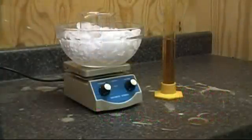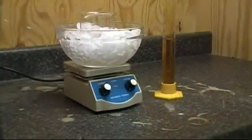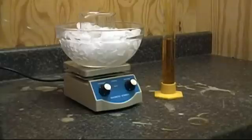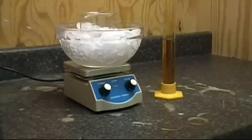To begin you'll need an ice bath set on top of a magnetic stirrer with a beaker in the middle. In the beaker place a stir bar and 80 milliliters of concentrated sulfuric acid. Let it set for some time to allow the acid to get cold.